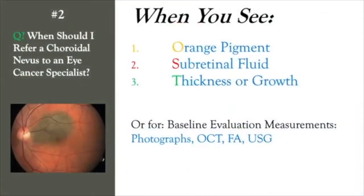When should I refer a choroidal nevus to an eye cancer specialist? A choroidal nevus is suspicious if it has orange pigment, subretinal fluid, thickness, and definitely growth. However, a number of patients are sent just for baseline evaluation measurements using photography, OCT, fluorescein, and ultrasound as needed.